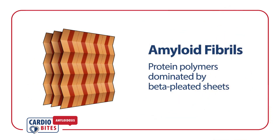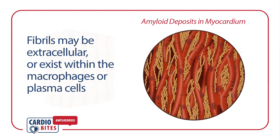Amyloid fibrils are protein polymers with structures dominated by beta-pleated sheets. The amyloid fibril deposits are usually extracellular. However, they may also exist within the macrophages and plasma cells.